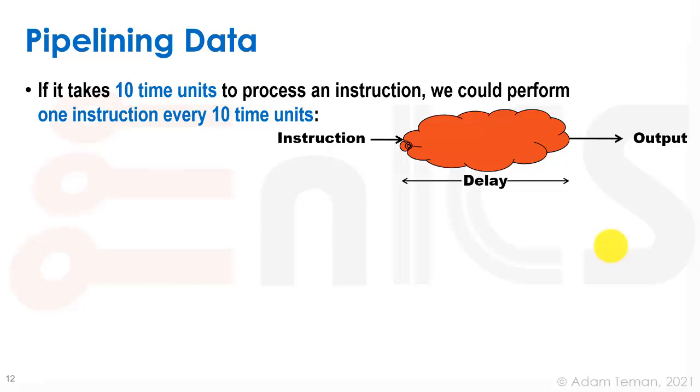And so we put the instruction here on the left side, we put it into the sequential into the combinatorial logic, it has this long delay of 10 time units, and then we get an output. And that's our initial latency. And that's what happens if we want to do one instruction without actually using some sort of pipelining.